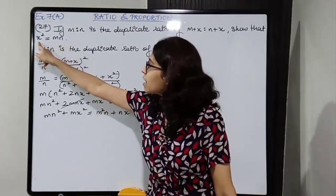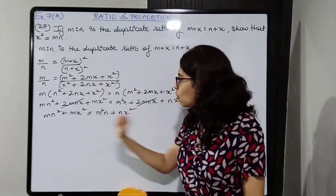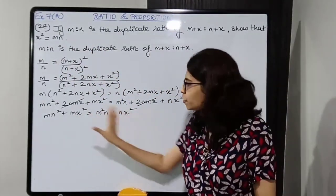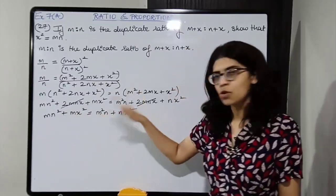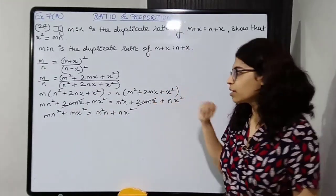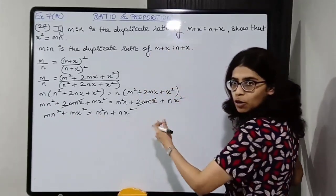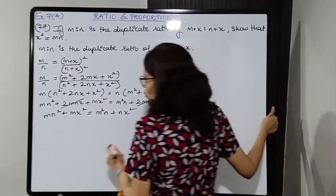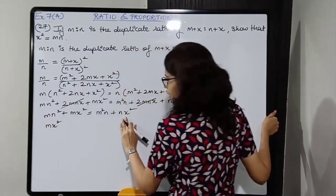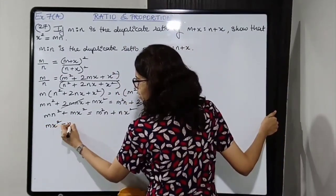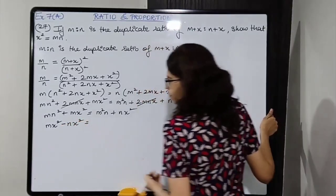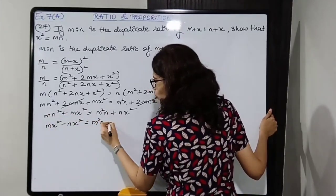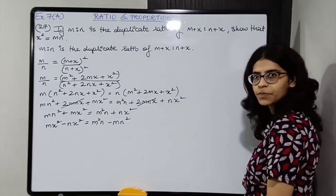Now, group the x squared terms on one side and the remaining terms on the other side. Shift mx squared and nx squared together: mx squared minus nx squared equals m squared n minus mn squared.